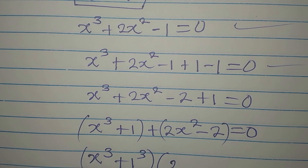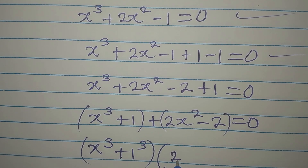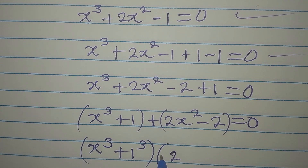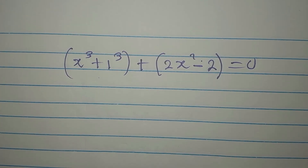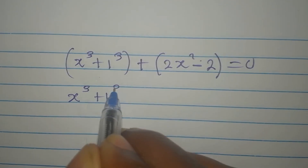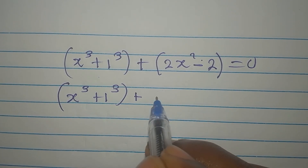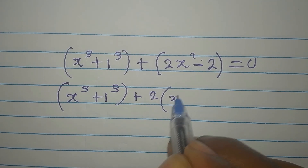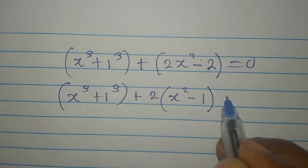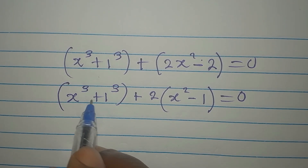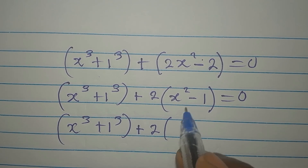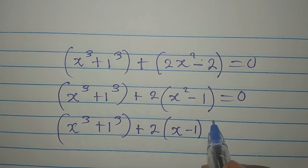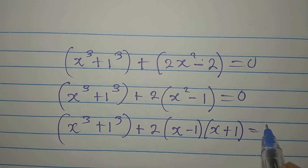The first group is x cubed plus 1 cubed. From the second group, 2 is common, so we factor out 2 to get 2 times x squared minus 1, which by difference of two squares is 2 times x minus 1 into x plus 1. For x cubed plus 1 cubed, we use the sum of two cubes formula: a cubed plus b cubed equals a plus b into a squared minus ab plus b squared.